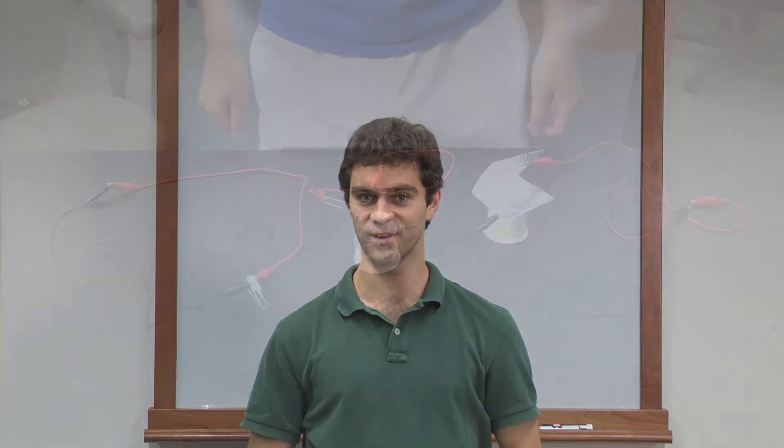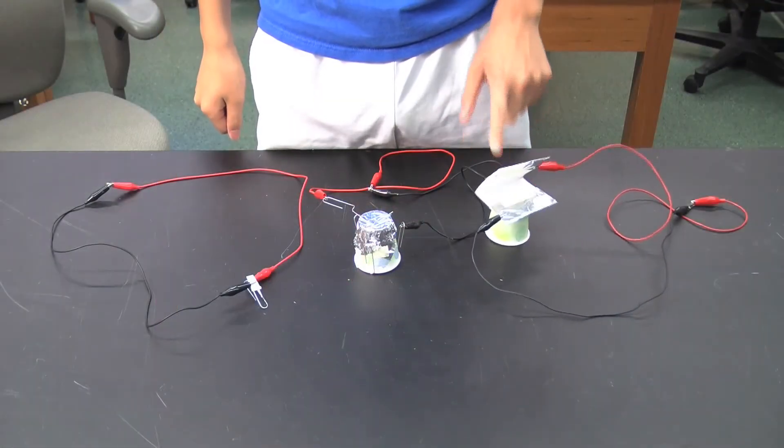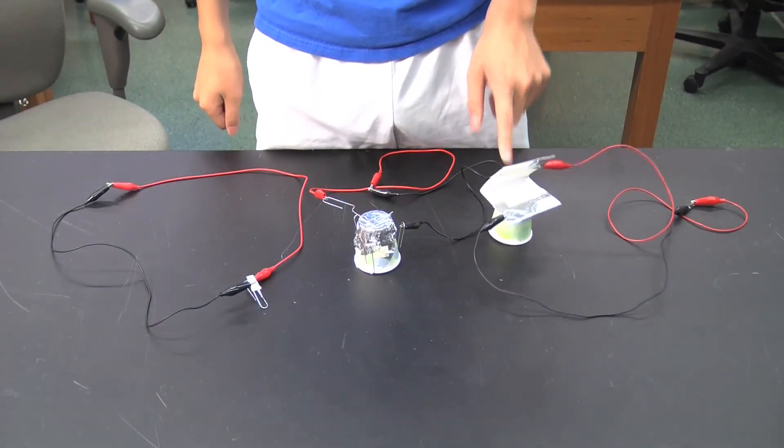In activity four, the students learn about circuits. And then in activity five, they apply that knowledge to create a simple buzzer that acts as a sensor at the end of the arm.